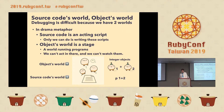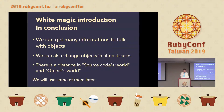Source code is an acting script — the only thing we can do is write this script. The object world is the stage where our programs run, but we can't act in there, and we can't easily watch them. So debugging is difficult. Conclusion: we can get a lot of information by talking with objects, we can also change objects in almost every case, and there is a distance between the source code world and the object world.